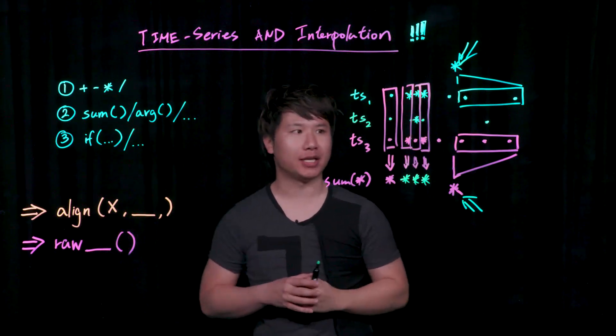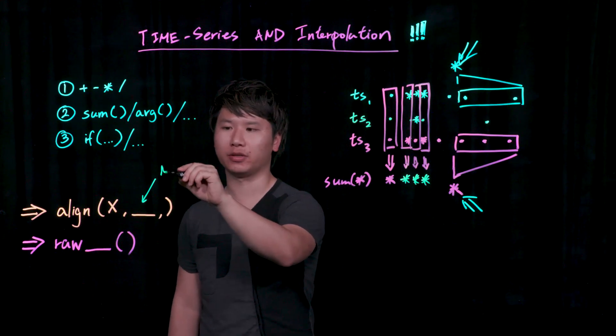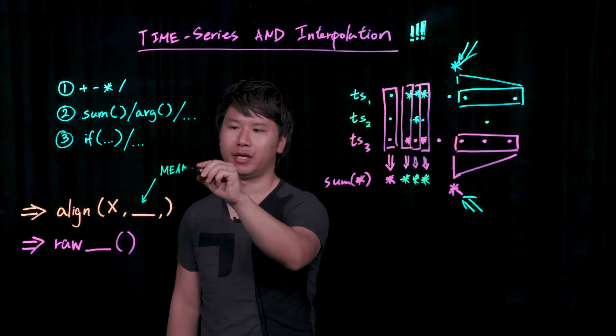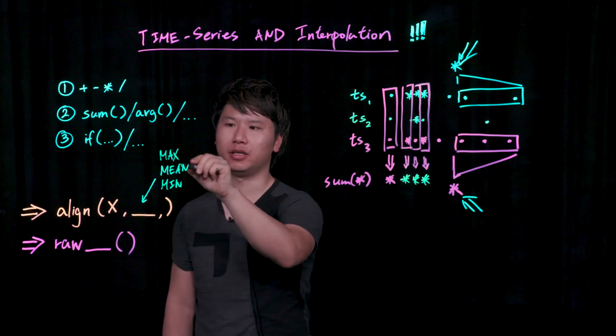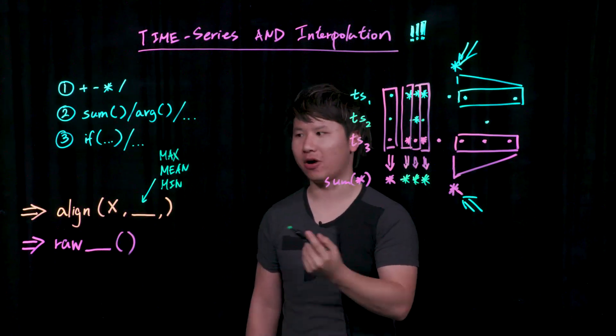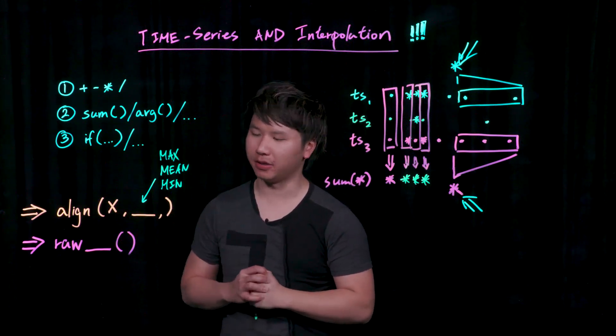So align actually lets you also control what is the actual summarization logic. So the default is to use mean, but you could very much use min, max, median, as well as last, first, count, and a whole series of aggregation and summarization possibilities.